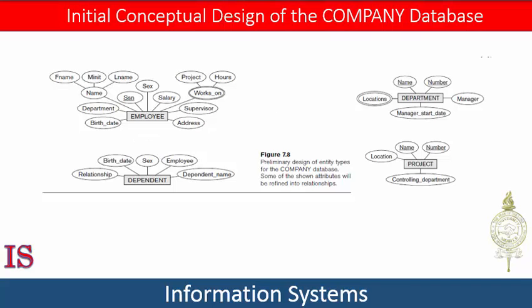A composite key must be minimal — all component attributes must be included in the composite attribute to maintain the uniqueness property, and superfluous attributes must not be included in the key. In ER diagramming notation, each key attribute has its name underlined inside the oval. Specifying that an attribute is a key of an entity type means the uniqueness property must hold for every entity set of that entity type.